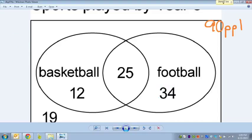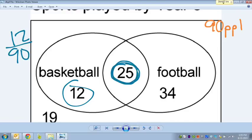All right. Here's where it gets tricky. What's the probability that I pick somebody who likes basketball? I know what you're thinking. Oh, 12 people like basketball, right? So 12 out of 90. But remember, this middle number needs to be included because these people also like basketball.